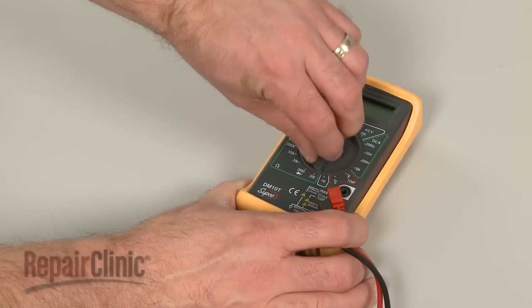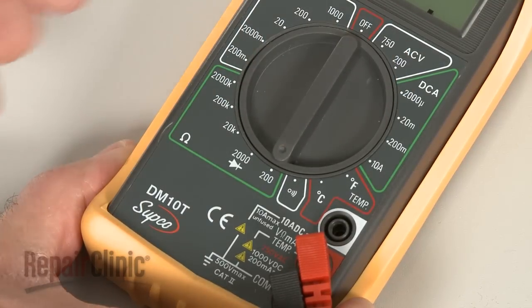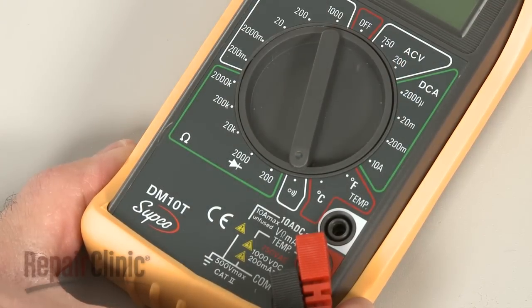When using a digital model, again rotate the dial to the lowest setting for ohms of resistance or resistance with tone if your meter has this option.